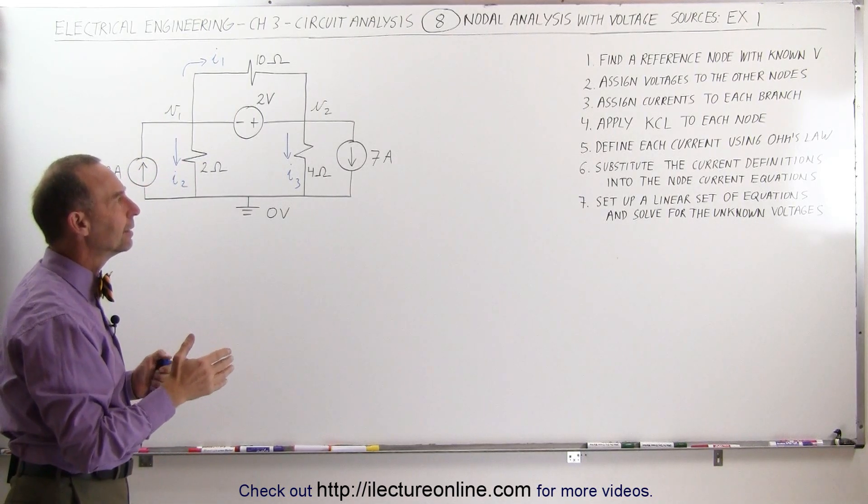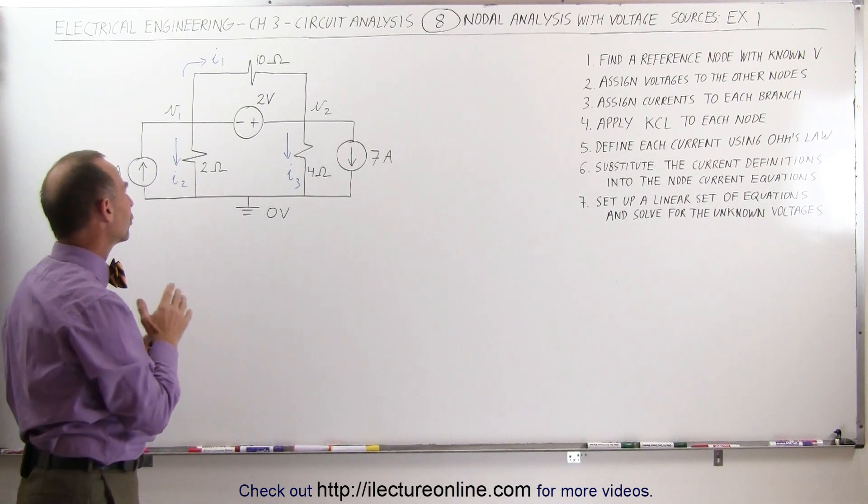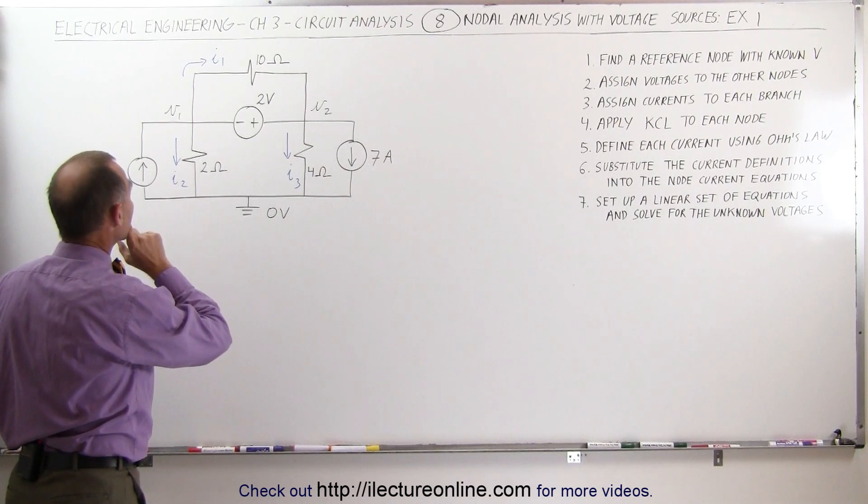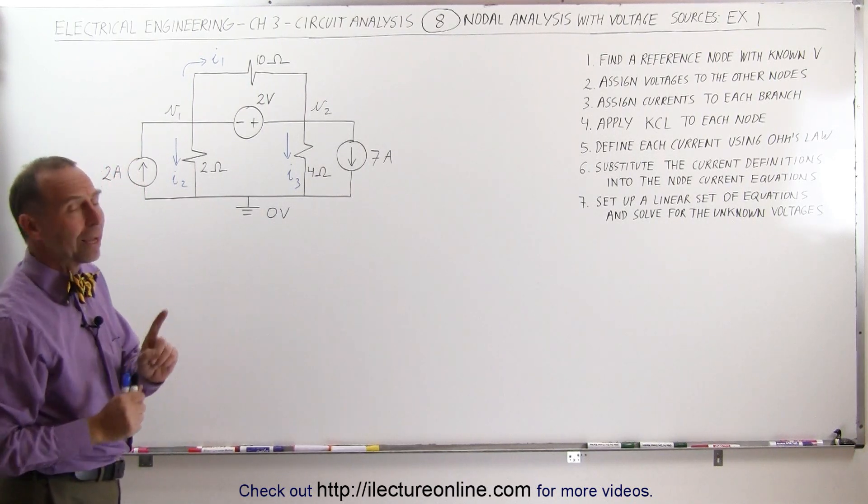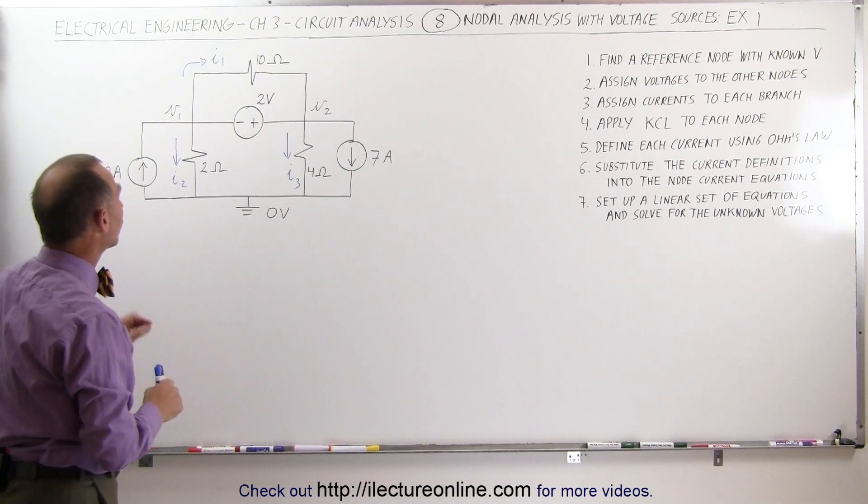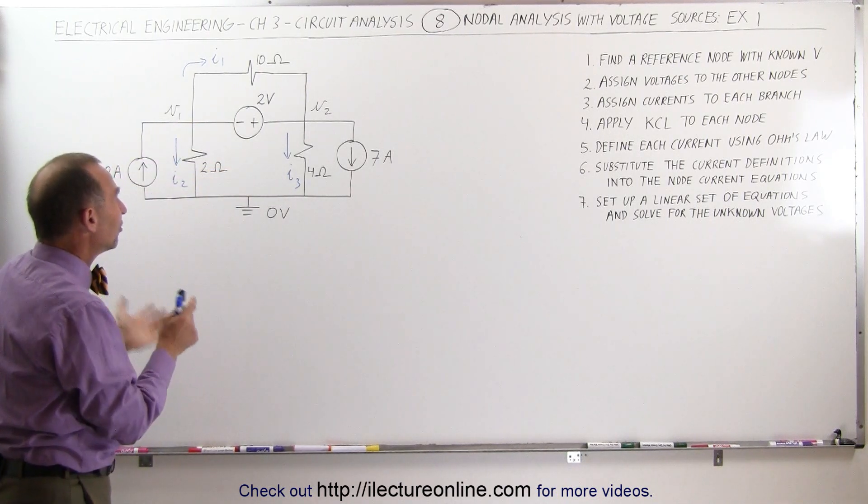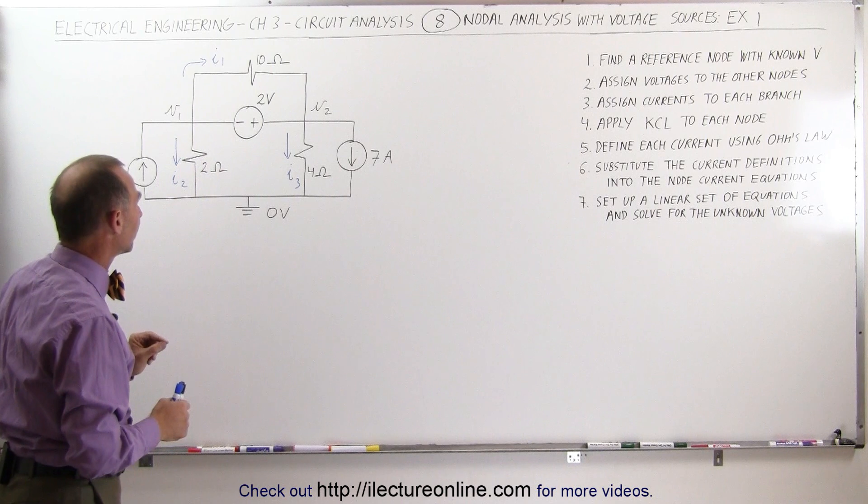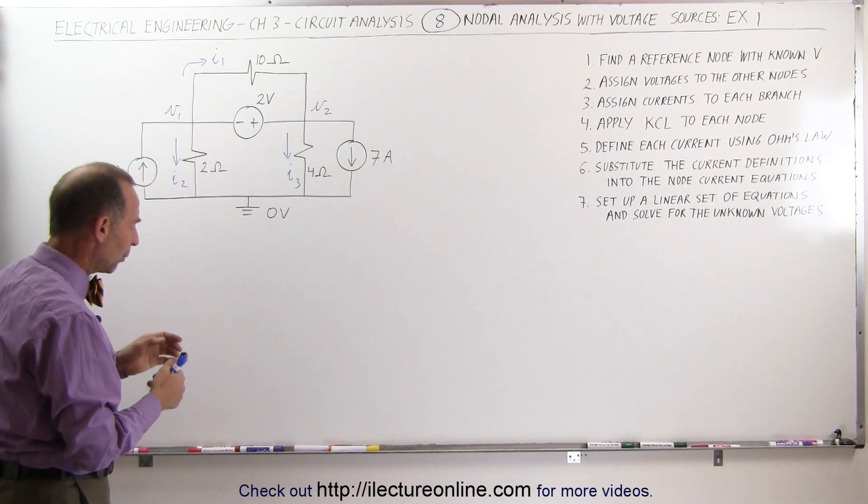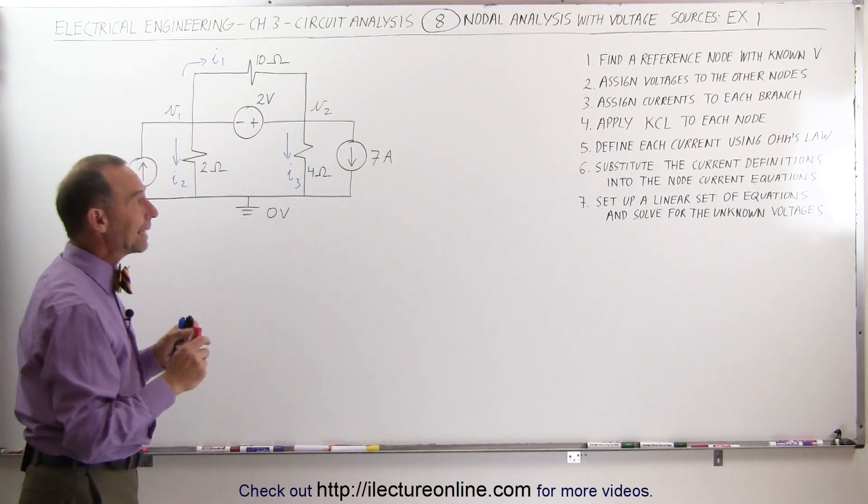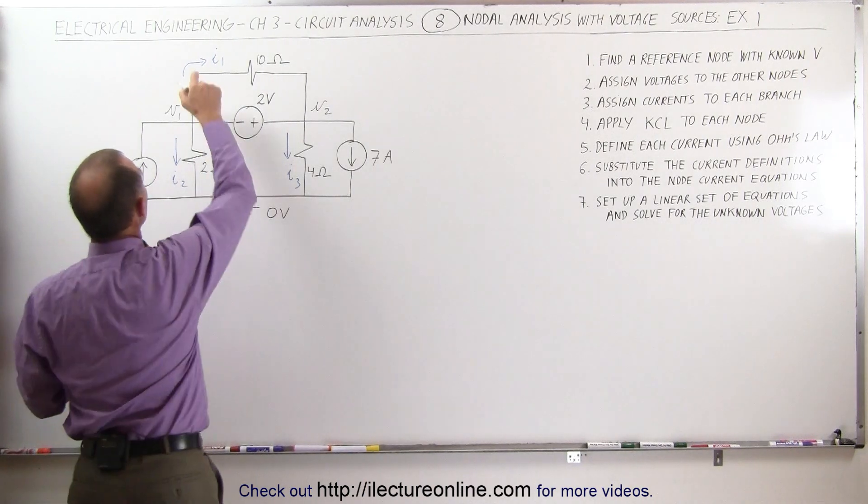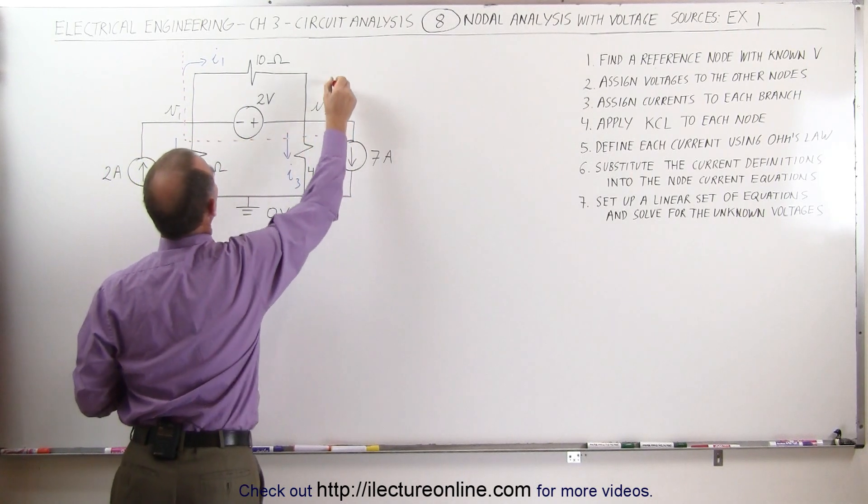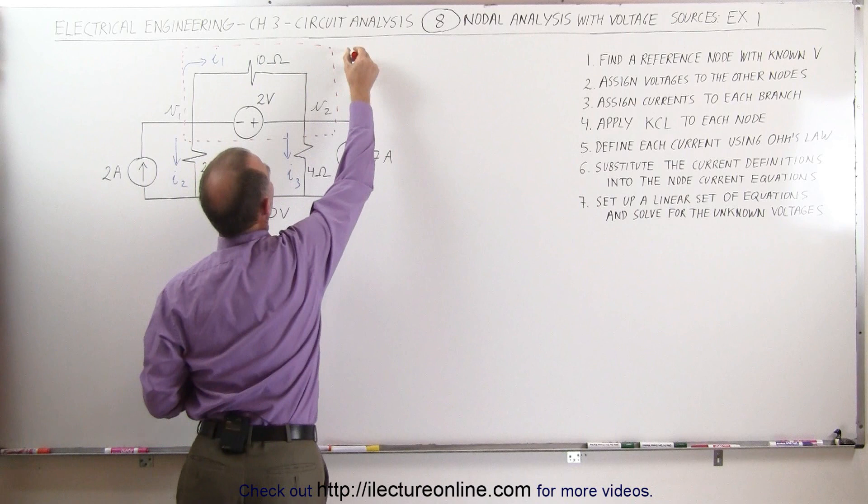The next step, we're going to apply the Kirchhoff current law to each of the two nodes to come up with the equations that we need to solve for the voltages, but there's one problem here. The problem is this voltage source. How do we deal with that? What we can do at this point, we can make what we call a super node. We can take this whole thing right here and think of this as a single node. Let's call this a super node.